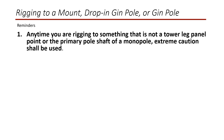Rigging to a mount, jimple, or drop-in jimple requires that these appurtenances and any appurtenances the load passes through be evaluated for the forces imposed on them and on the tower structure. This may be a review of an engineered load chart or charts by a qualified person, minimum class 3, and/or a site-specific analysis by a qualified engineer, class 4.